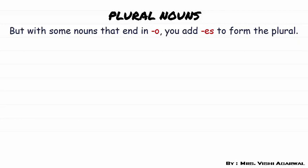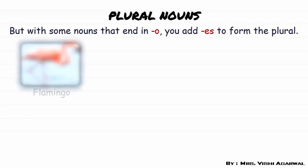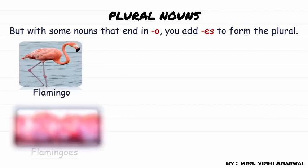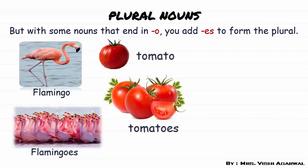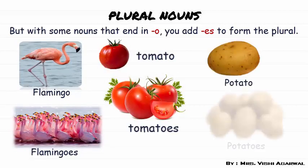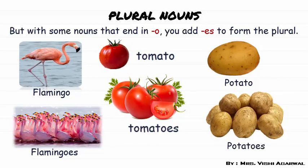But in some nouns ending in O, you add ES to form the plural. For example: flamingo becomes flamingoes, a tomato becomes tomatoes, a potato becomes potatoes, a hero becomes heroes.